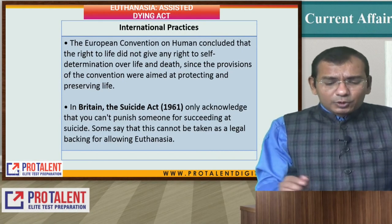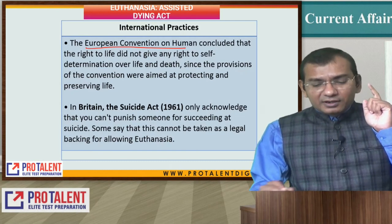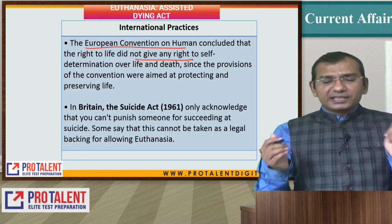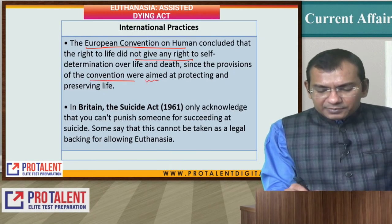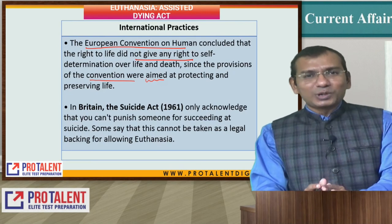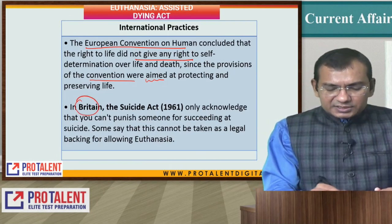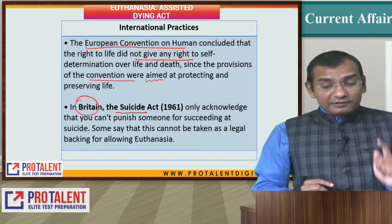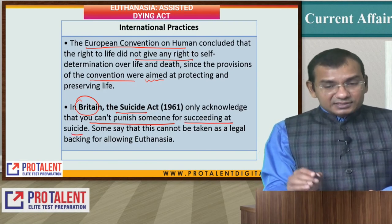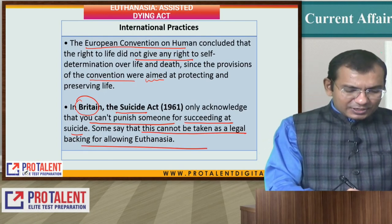What are the international practices? European conventions on human rights concluded that the right to life did not give a right to self-determination over life and death. Since the provisions of the conventions were aimed at protecting and preserving life, they said the right to life contains only the right to life — you do not have a right to take a life. In Britain there is the Suicide Act 1961, which acknowledges that you cannot punish someone for succeeding at suicide, though some say this cannot be taken as legal backing for allowing euthanasia.